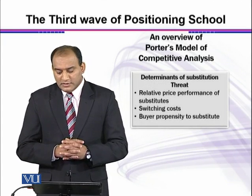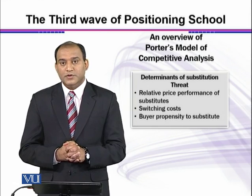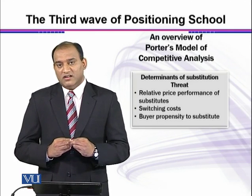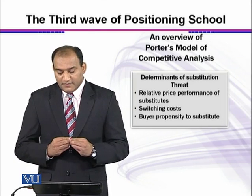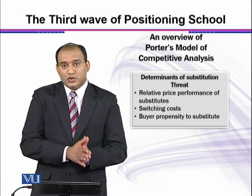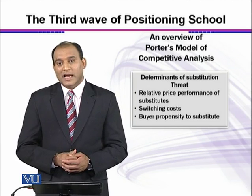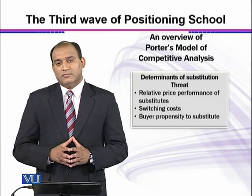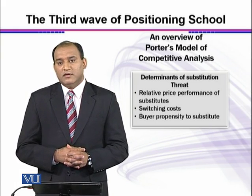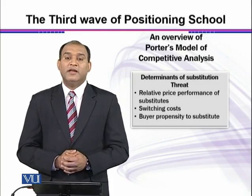The determinants of substitute threat include relative price performance of substitutes, switching costs, and buyer propensity to substitute. If a substitute's price performance is better, it's a great threat. If switching costs are low, that is also a problem. If buyers easily switch to substitutes — for example, when they start preferring fruit drinks over Coke — that is a problem for Coke and cola products. In summary, the positioning school's third wave, based on empirical evidence, argues that these five forces in the market determine the position of a firm.